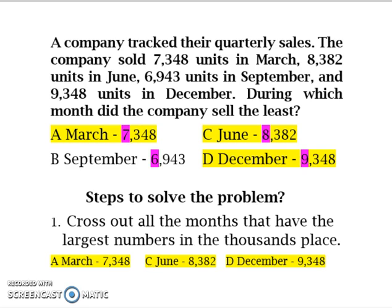And we can also cross out D, December, 9,348. The reason that we can cross out these three answer choices is because they are not the least or the lowest number in the thousands place.